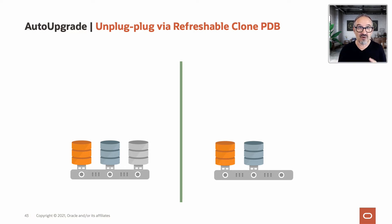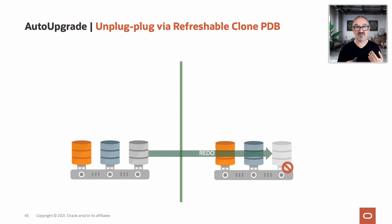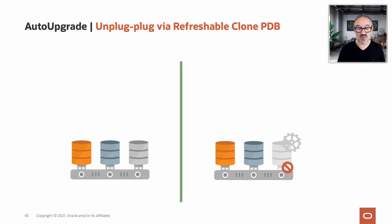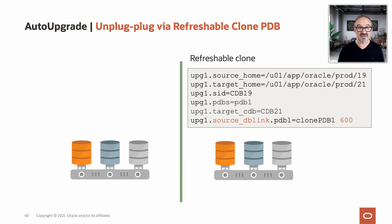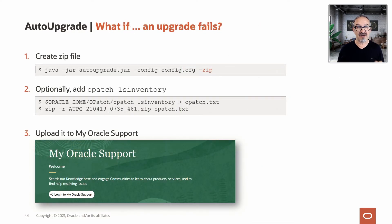This feature can do even more because we added the ability to do refreshable clones across servers with AutoUpgrade. The PDB will be cloned over the database link using the same prep steps as before, but now the PDB will be kept in read-only mode — it's not open unless you break the mechanism. You can even upgrade afterwards if you want. The only difference in the config file is adding a number behind the source DB link parameter — 600 means 600 seconds, so every 10 minutes it will be refreshed automatically. And if anything goes wrong, just collect your zip file with trace files, add opatch lsinventory and the alert log, and upload to My Oracle Support.